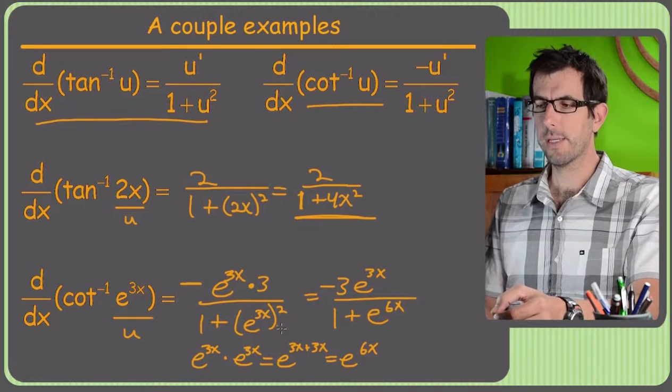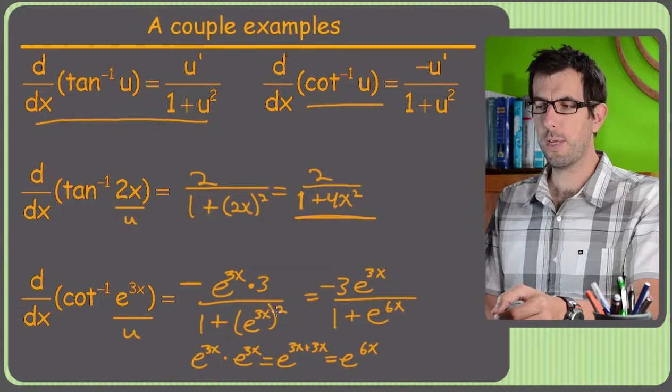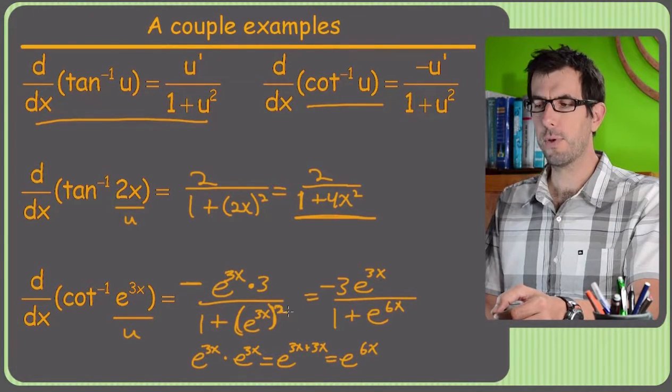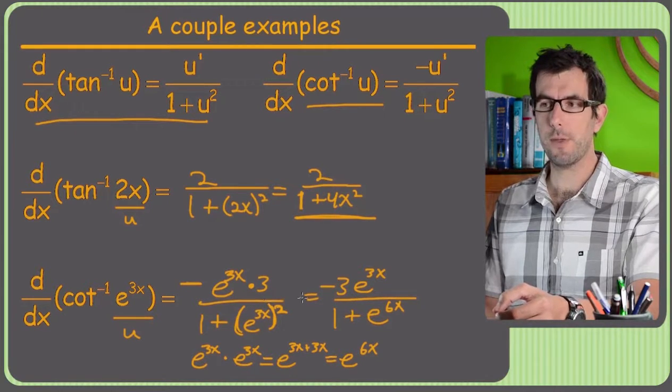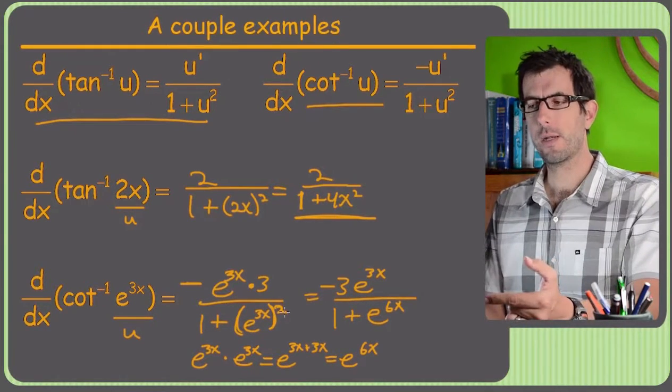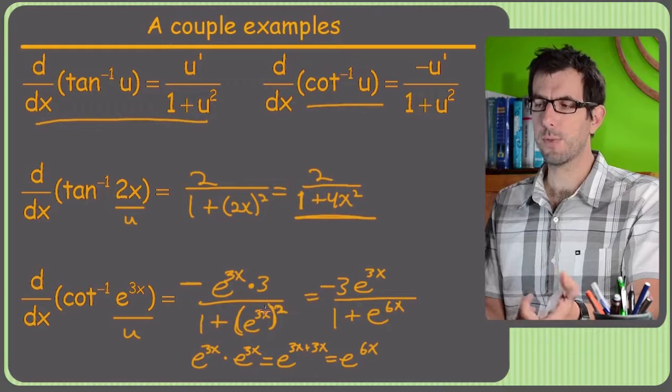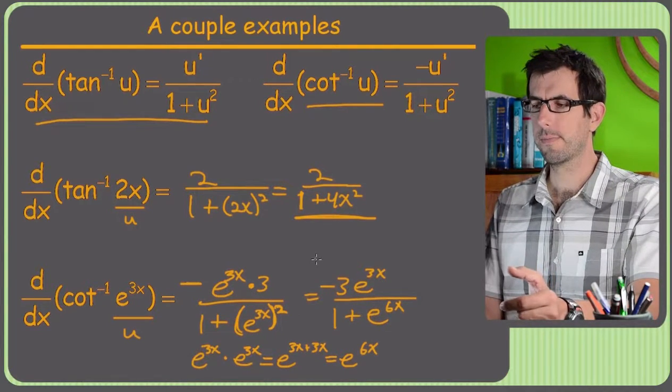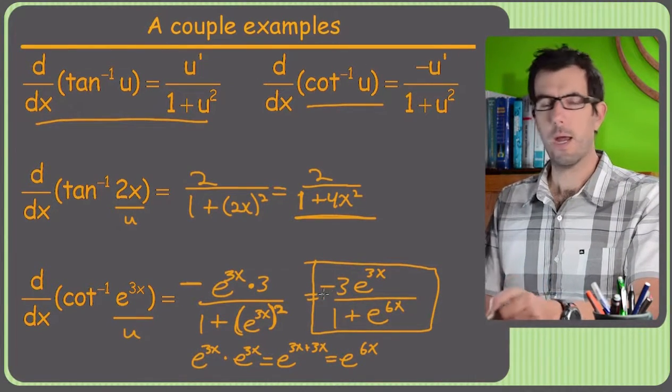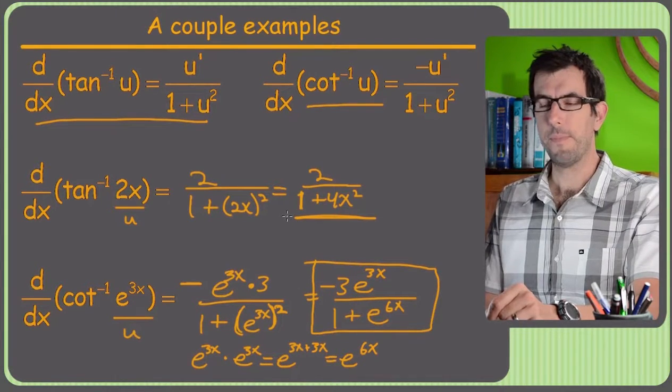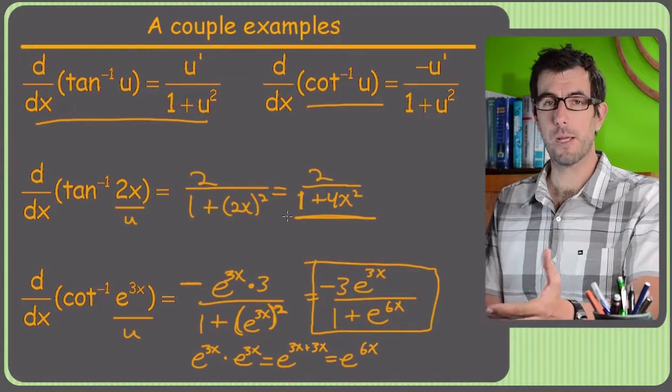And you also could have gotten that just realizing, whenever you have something to an exponent and then another set of parentheses and another exponent, you can just multiply the two exponents. So E to the 3x squared is just E to the 2 times 3x, which is E to the 6x. Alright, so hopefully that straightens these out for you. Like I said, it's just really plug and chug.